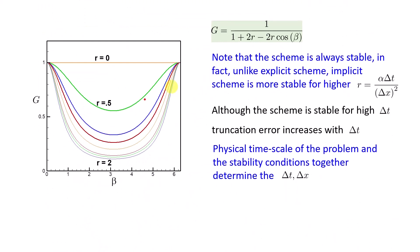Plotting g versus β from 0 to 2π, even for large values like r = 2, g stays between 0 and 1 at all times, confirming unconditional stability. When r is high, g approaches 0, meaning the scheme is actually more stable. However, keeping Δt large increases truncation error, so the physical problem must guide the choice of Δt and Δx, even though stability imposes no restriction.